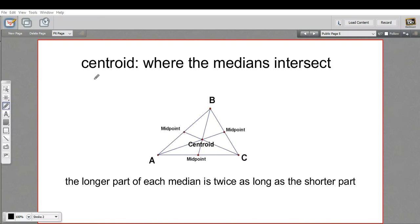Here we have another one of the centers of a triangle. This one is called the centroid, and the centroid is where the medians intersect.